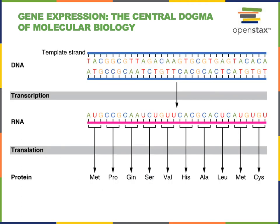DNA is used as the blueprint to direct the production of proteins. Each three nucleotides functions as a codon. A three-nucleotide sequence of DNA is converted to a three-nucleotide sequence in the messenger RNA. During translation, those codons — the three-nucleotide sequences in the messenger RNA — are interpreted by the ribosome to direct the sequence of amino acids incorporated into the polypeptide being synthesized.